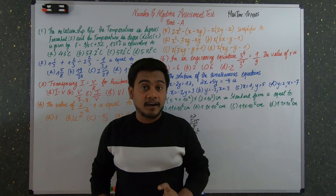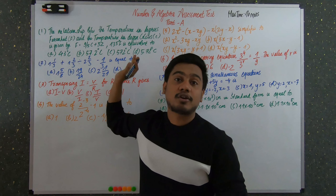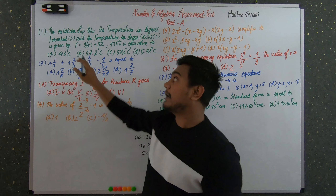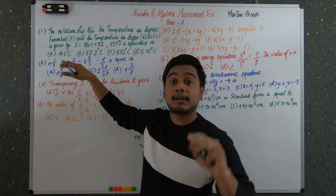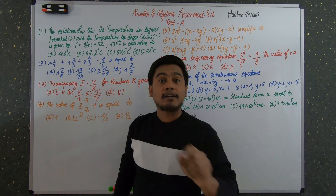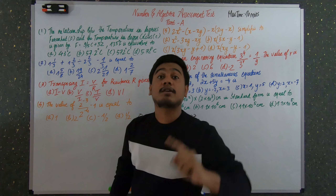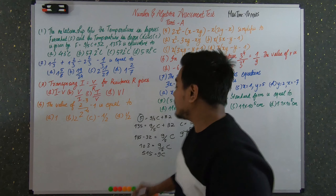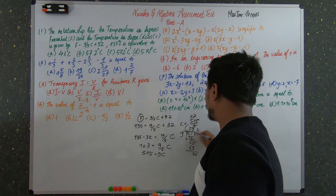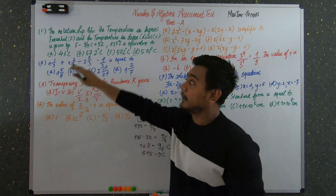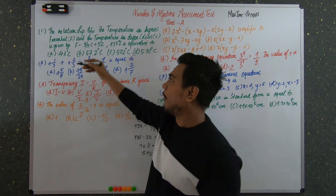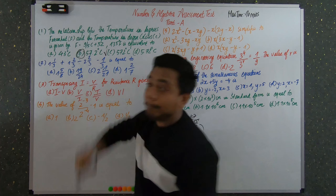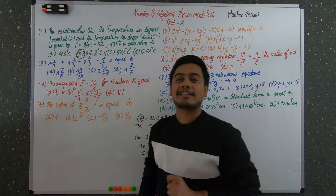A good tip for multiple choice questions: solve for the final answer first, then look at the options — don't let the listed mid-step values mislead you. Checking our answer of 57.2°C against the options, option B is 57.2 degrees Celsius. So B is the correct answer for question one.